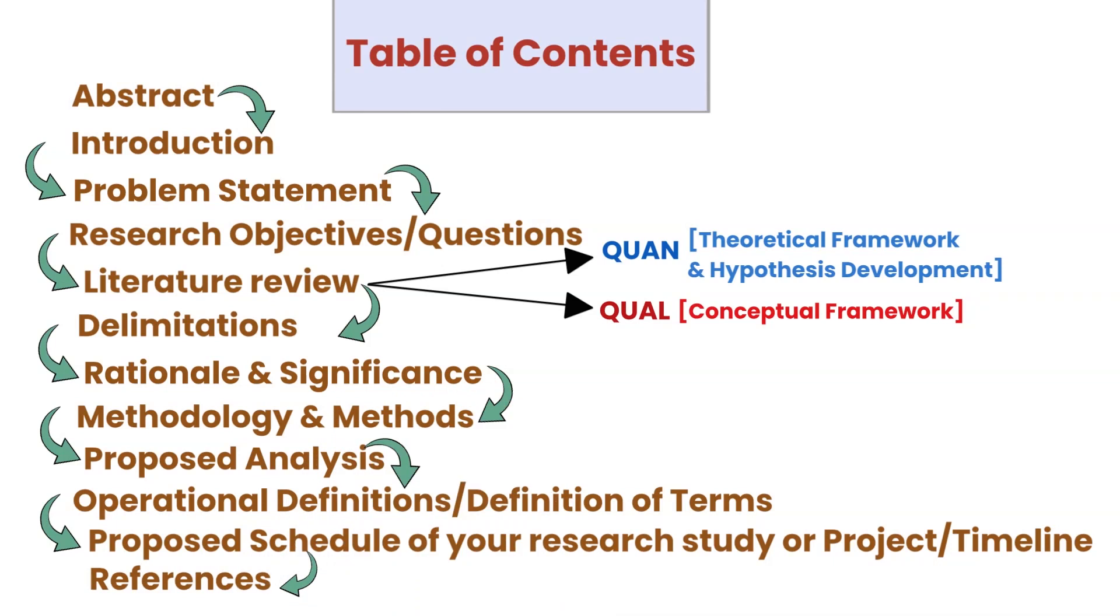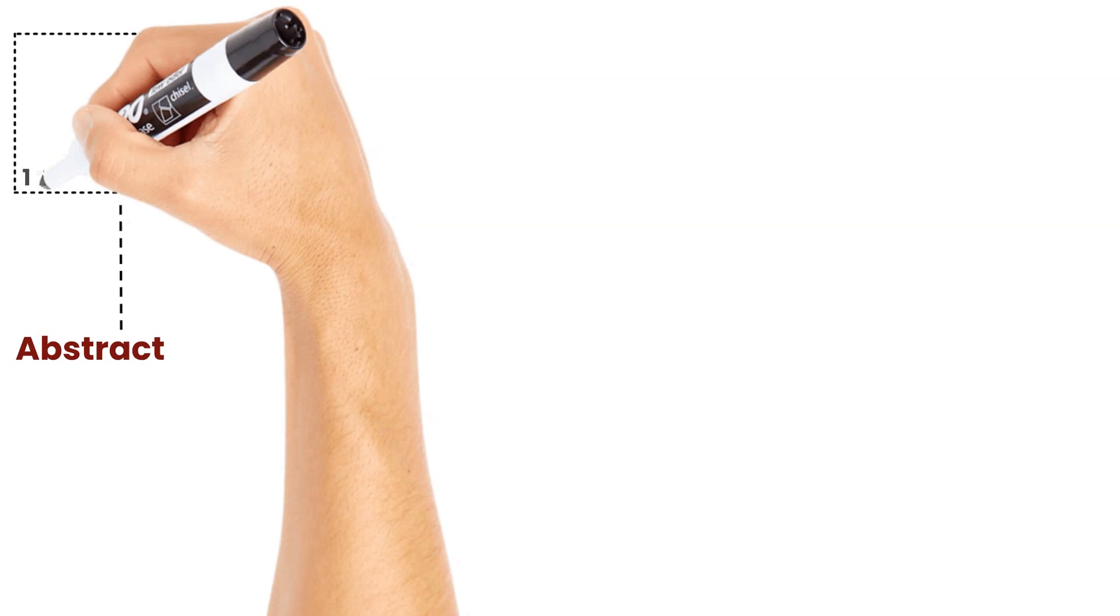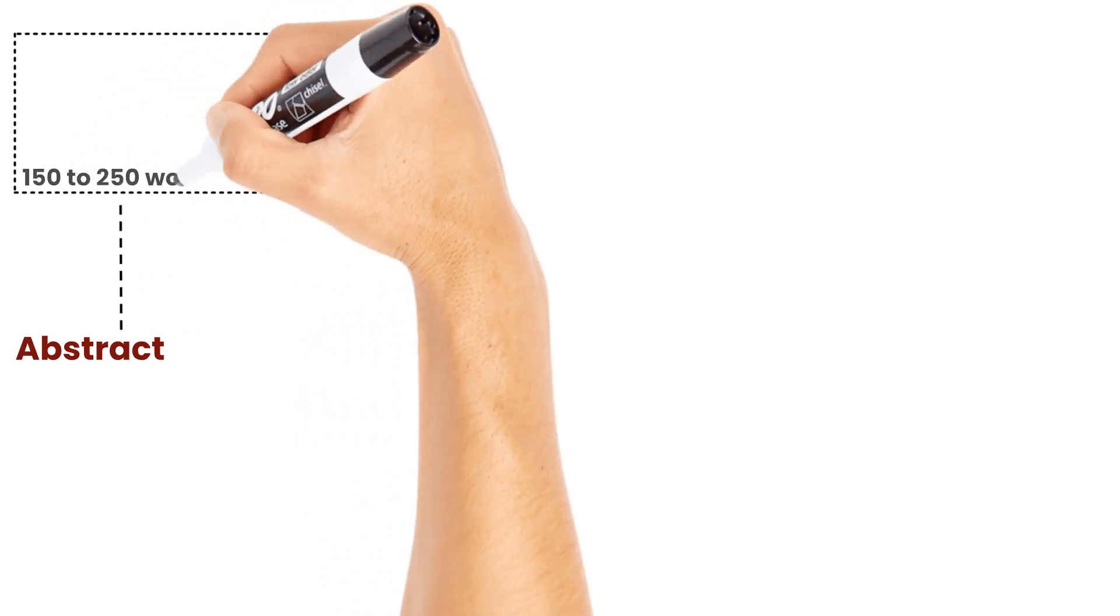Let me give a brief overview of all these sections. So the very first component is abstract. An ideal length of abstract should be between 150 to 250 words.